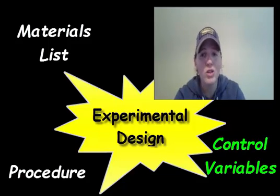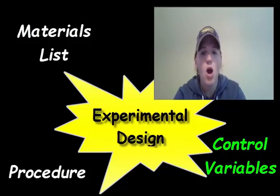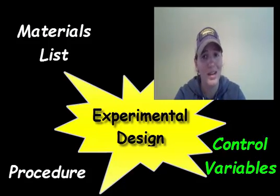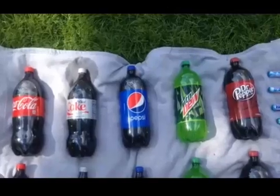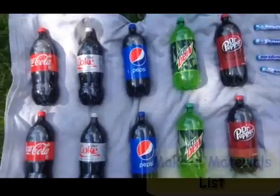We have our control variables — the one type of variable we haven't talked about yet. Our control variables are what stays the same. With a good experiment, only two things change: your independent and your dependent variables. Everything else should be controls.